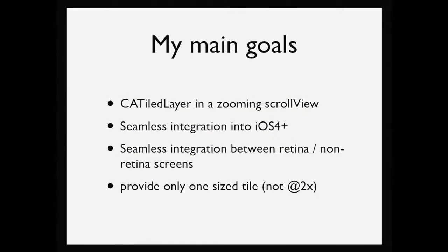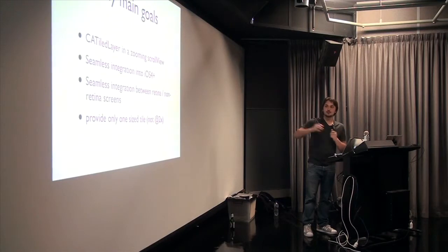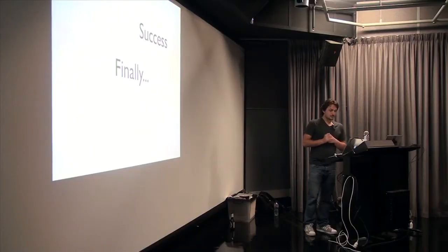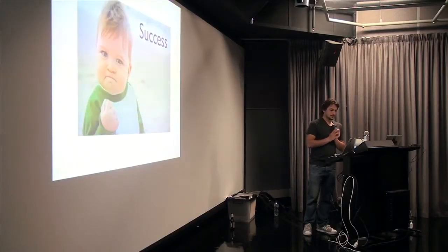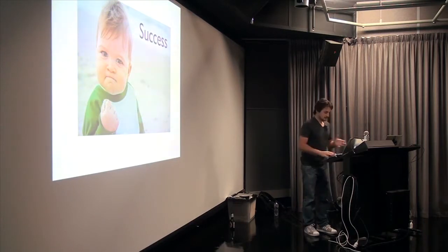Anyway, I come here with an actual story. My main goals and the reason that I struggled was - see, I just wanted a zooming scroll view. I wanted iOS 4. I wanted retina non-retina. And I did not, at any means, want to give @2x images. Because I thought that's just wasting all these pixels. I'm adding 2x as many things to my app. So, I had all these requirements that I struggled with. Anyway, finally, success.